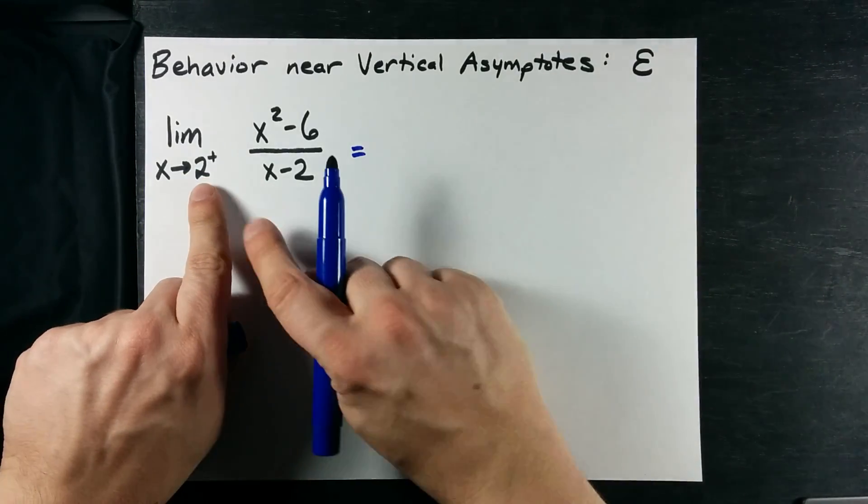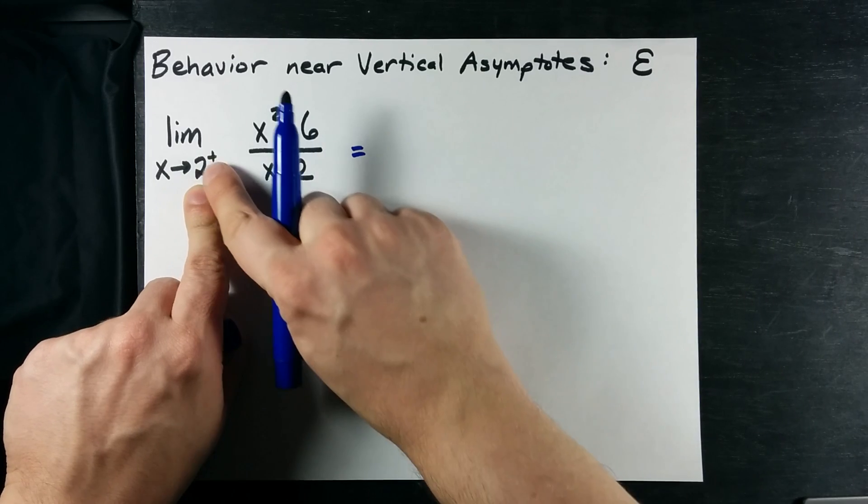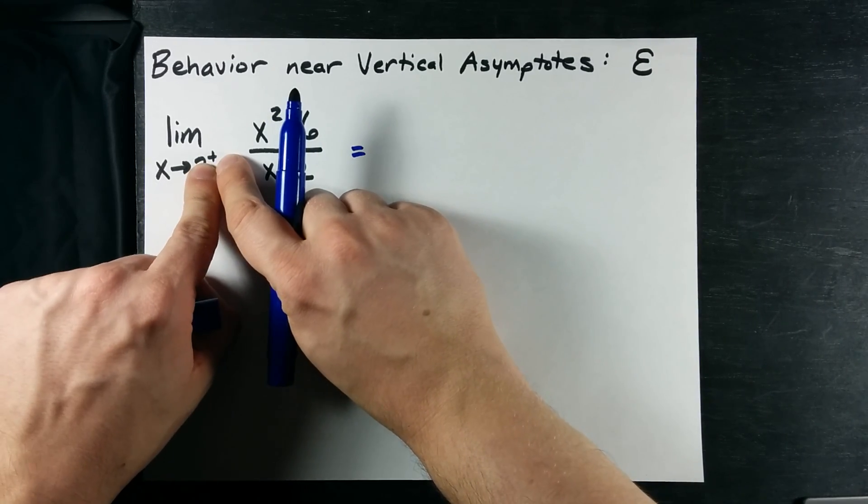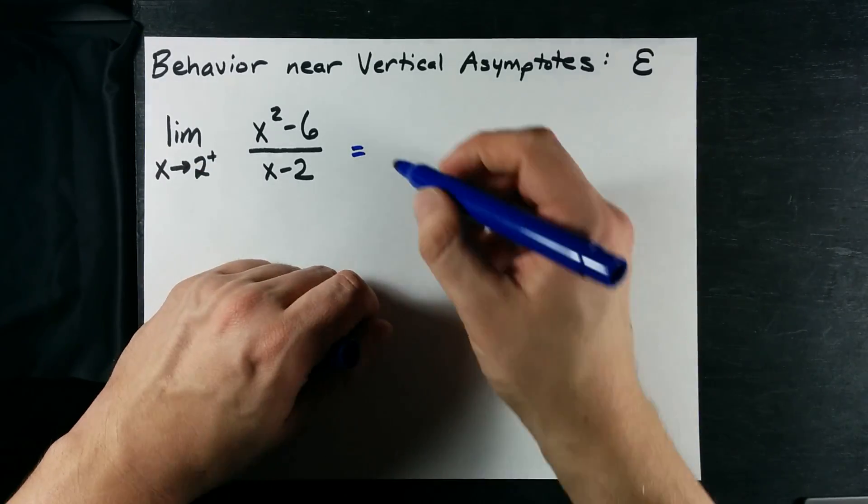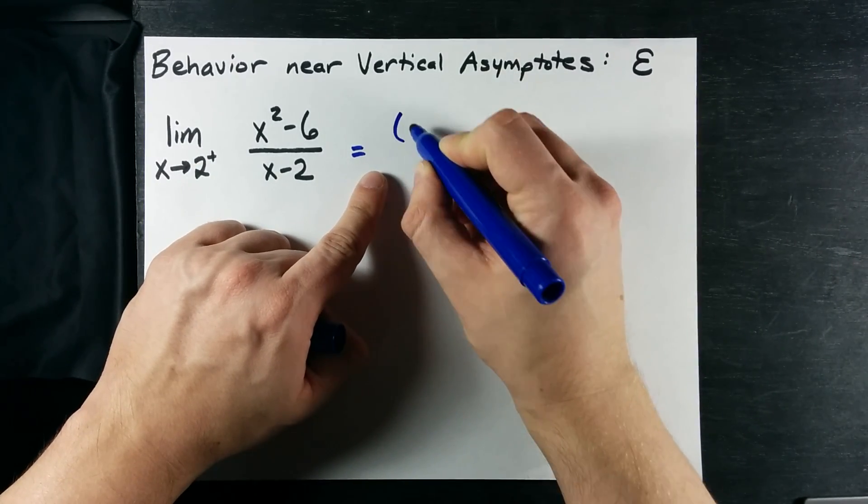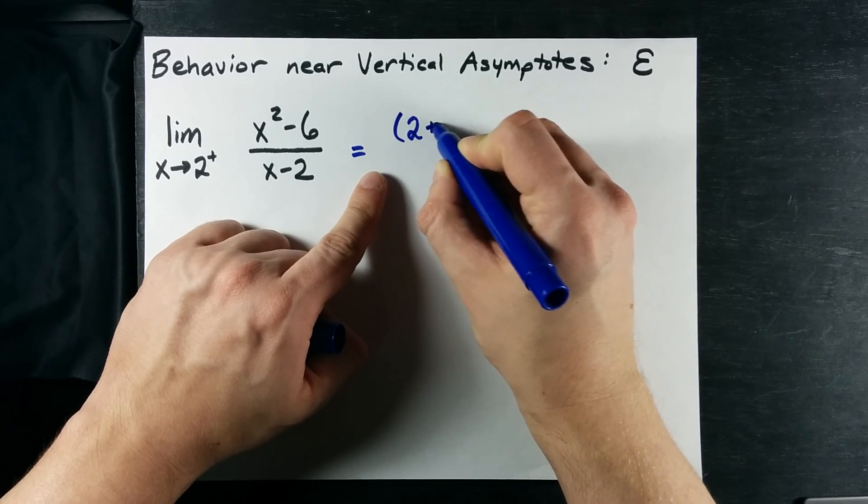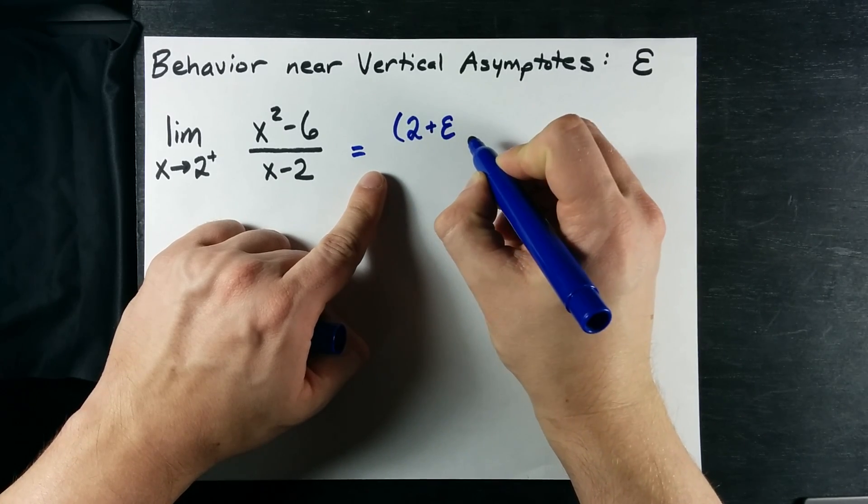Now, I'm going to investigate the behavior of this function as we approach 2 from the right-hand side. That's what this little subscript 2 plus is. So, the x value that I'm plugging in is 2 plus a tiny number.